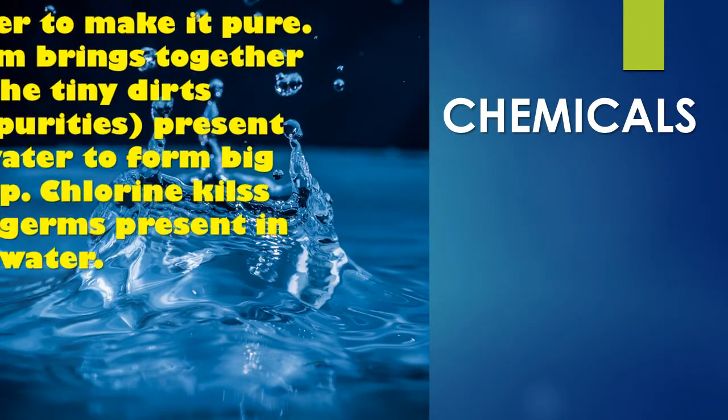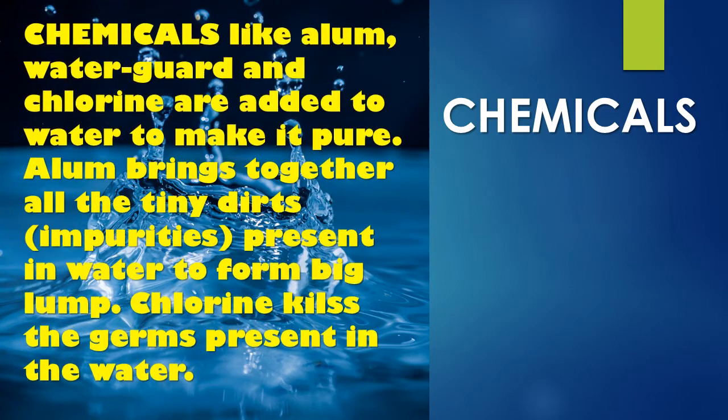Chemicals are also another method of purifying our water. Chemicals like water guard, chlorine, and alum are the things we use to add to our water to make it pure. Chlorine, water guard, and alum are chemicals that we use to purify our water.